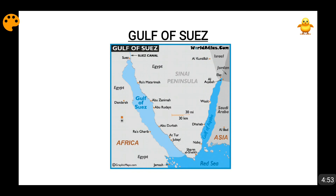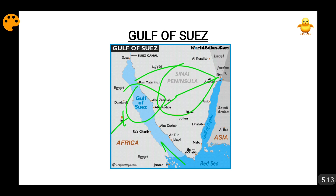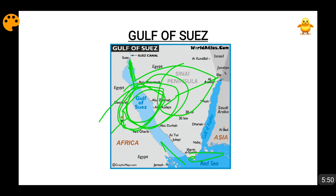Then we come to the Gulf of Suez. I have already mentioned that the Gulf of Suez is the northwestern tip of the Red Sea. It is surrounded by Egypt — the Sinai Peninsula is Egypt on one side, and Egypt is on the other side as well. This gulf is important because the Suez Canal leads from it, which increases connectivity between the Asian mainland and Europe. The Gulf of Suez opens into the Red Sea on the southern side, and through the Suez Canal it connects directly to the Mediterranean Sea — that is why it becomes very important.